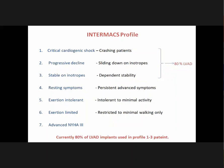INTERMACS reclassified patients into seven categories. The first is critical cardiogenic shock — patients rapidly crashing and succumbing very fast. Second is progressive decline with sliding down on inotropes. Third is patients stable on inotrope support — dependent inotrope stability. Approximately 80% of LVADs are given to these first three categories. The second and third categories are the patients who most often benefit from LVAD.